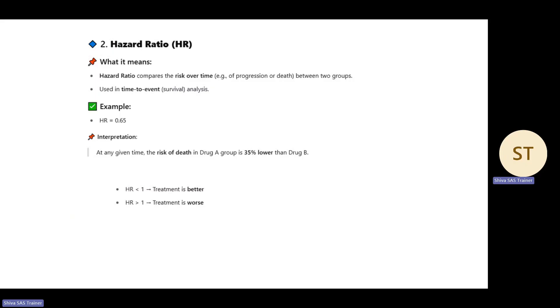When hazard ratio is less than one, the treatment is better. The first treatment is better than the second treatment. If we're getting greater than one, the treatment is worse. The first treatment is worse than the second treatment. At the given time, the risk of death in Drug A is 35% lower than Drug B. Here we're getting 0.65, which means less than one, so treatment is better.